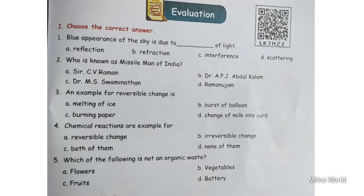Third question: An example for reversible change is? Options are: melting of ice, burst of balloon, burning paper, change of milk into curd. Reversible change means something that can come back to its original state. So the answer is melting of ice.